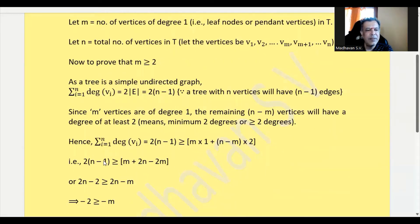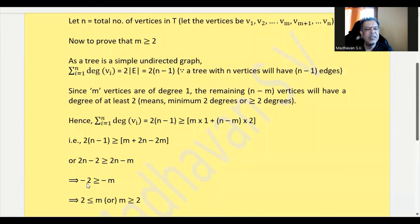By expanding it further, 2(n - 1) ≥ m + 2n - 2m. Simplifying, we get 2n - 2 ≥ 2n - m, which means -2 ≥ -m. Multiplying both sides by -1, the sign will swap, so 2 ≤ m.